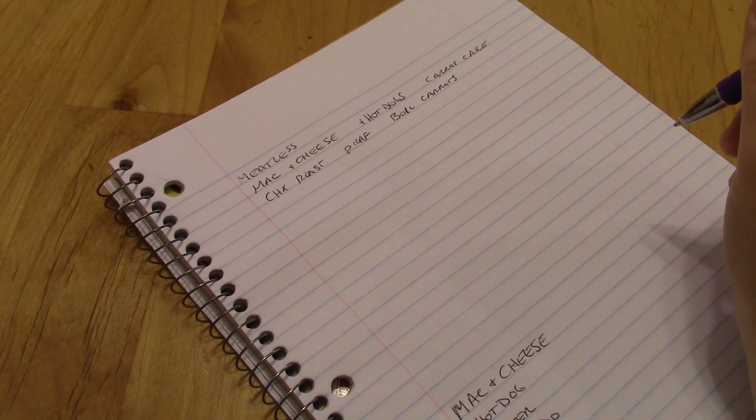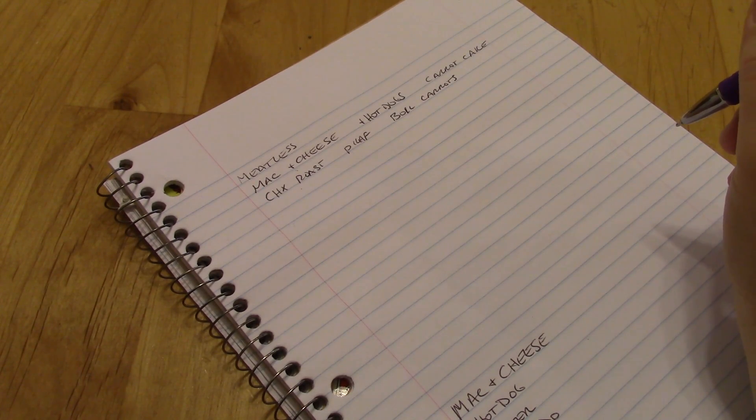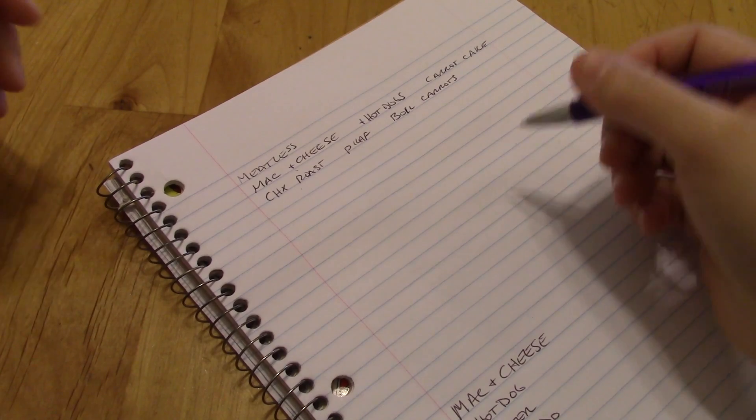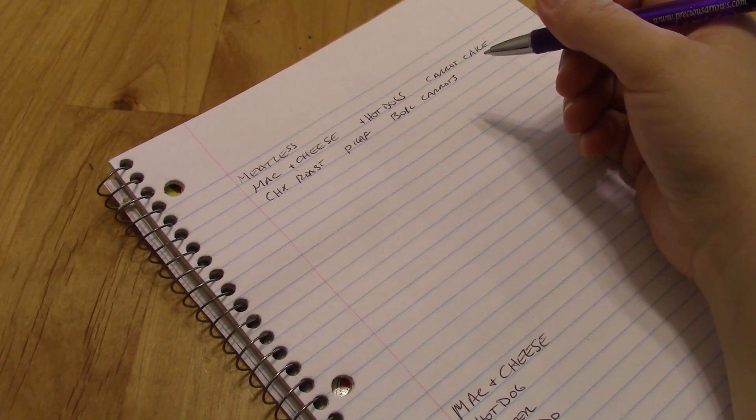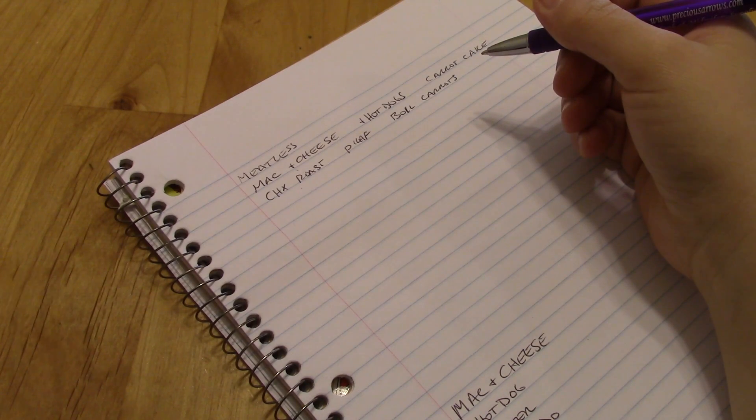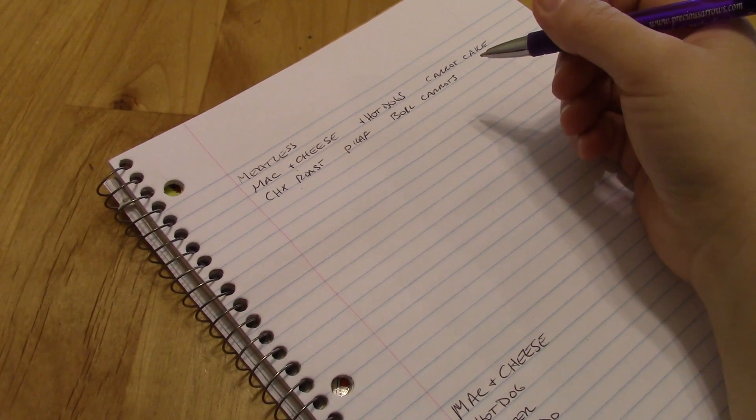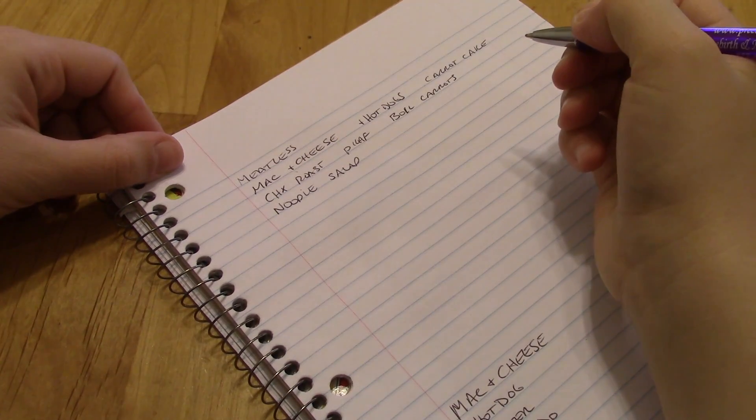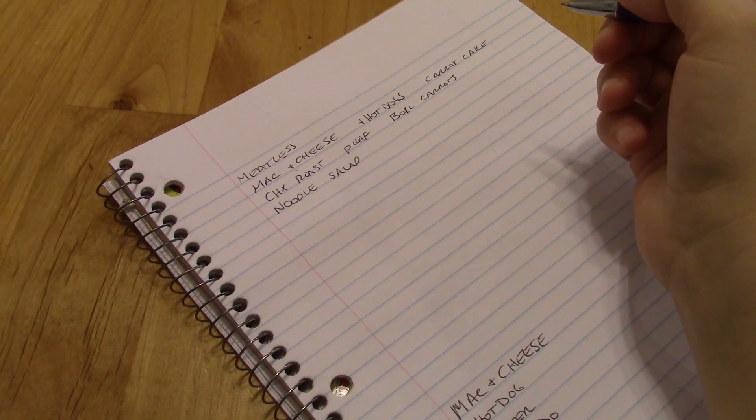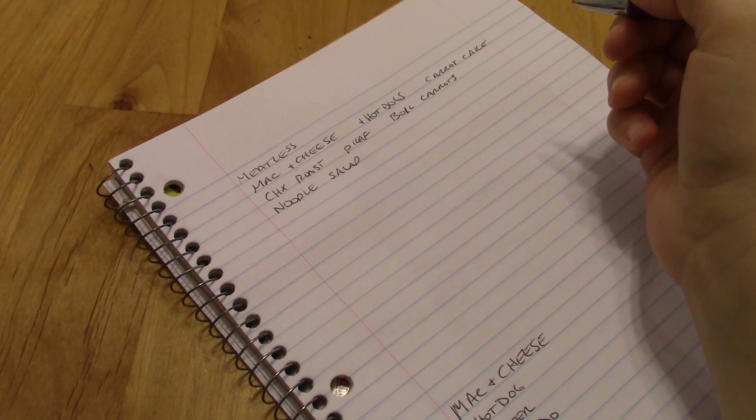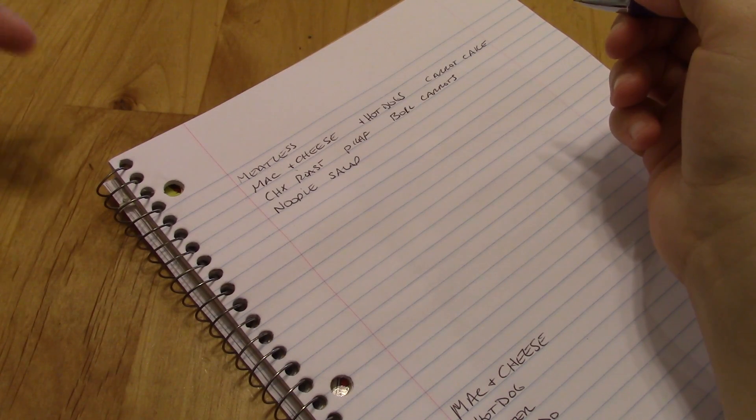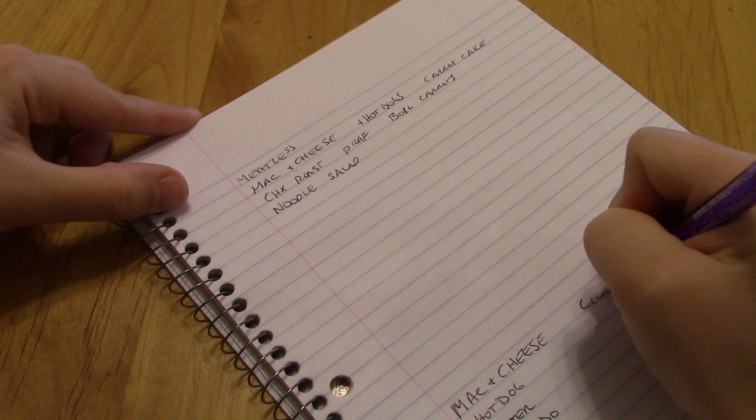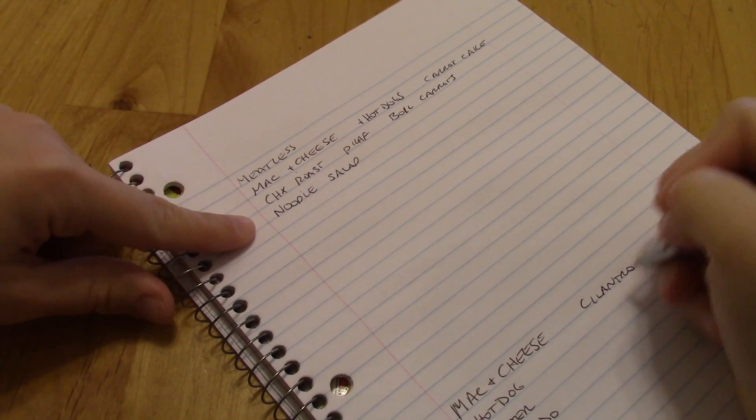Something that we made a couple weeks ago that turned out really delicious was a noodle salad, like a Vietnamese grilled pork noodle salad. And I have the other half of the pack of noodles, so I'm going to have that again because it's something that is really quick and easy to make. My family loves it. And I have a lot of the ingredients because I just made it a little while ago. That's made with rice noodles and then cucumber.